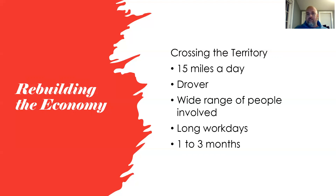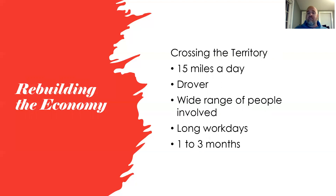The drover was the trail driver — the head driver responsible for getting the herd to market. Most herds consisted of 2,500 to 3,000 cattle. People of many backgrounds took part: Black, Hispanic, Indian, and white men, occasionally even a woman disguised as a man, and some workers as young as 13 or 14 years old.